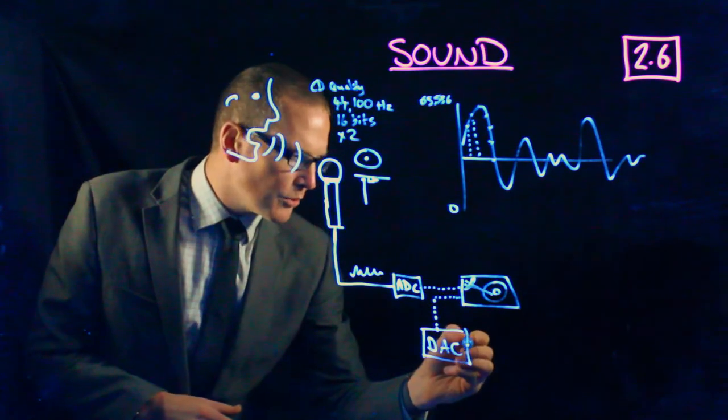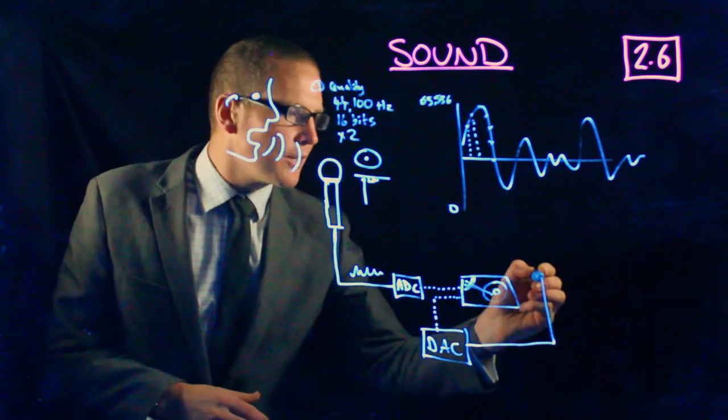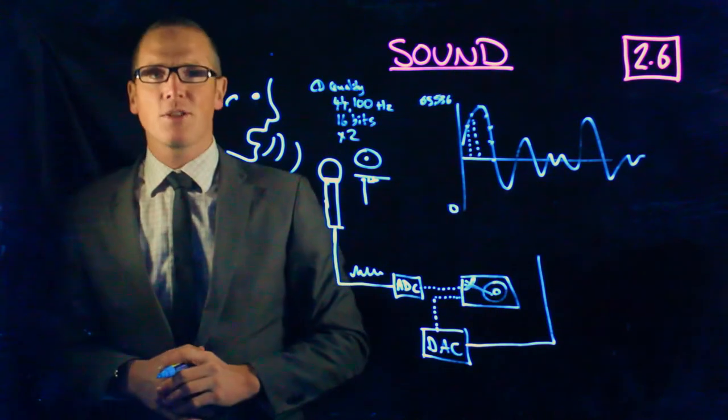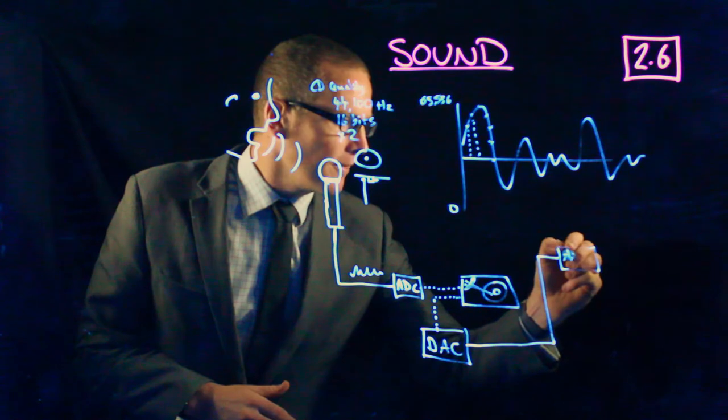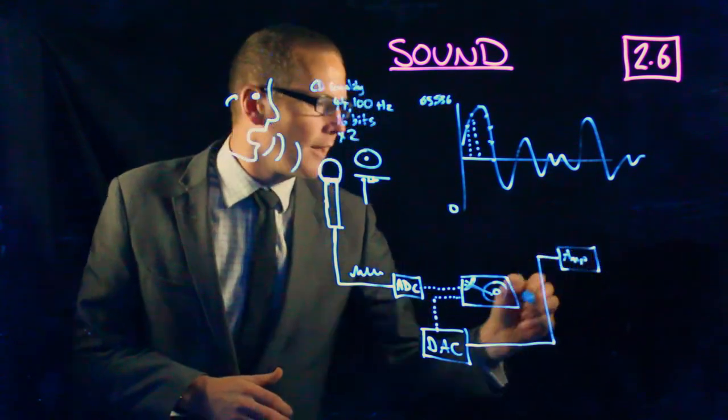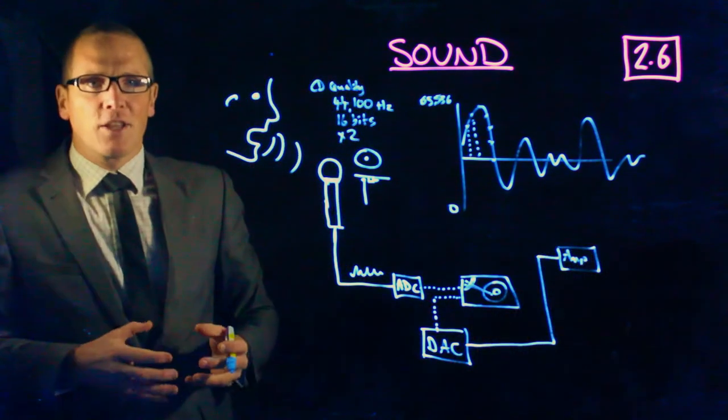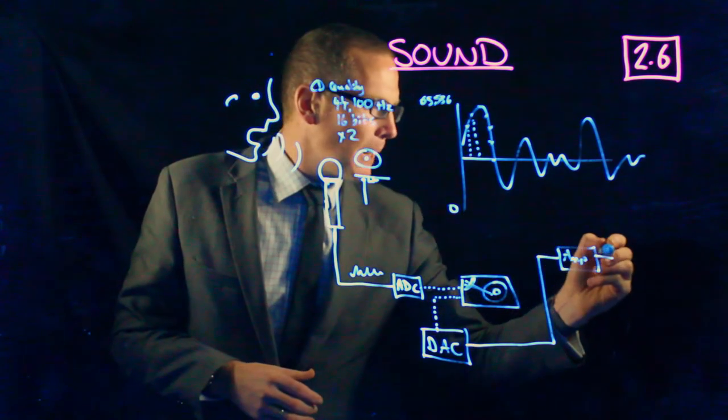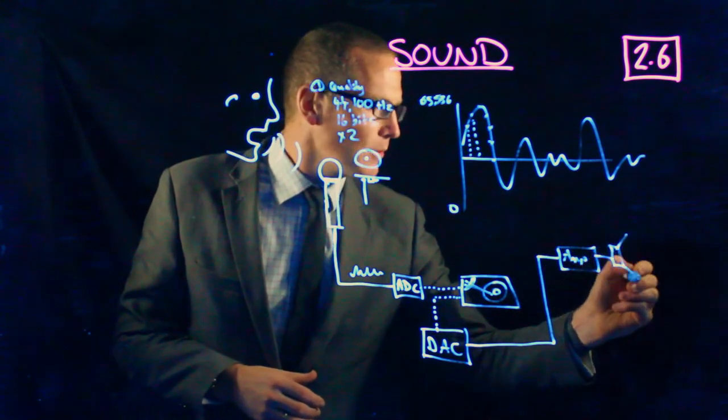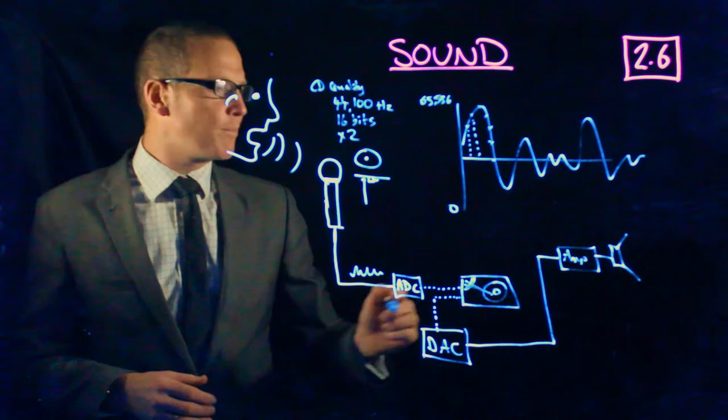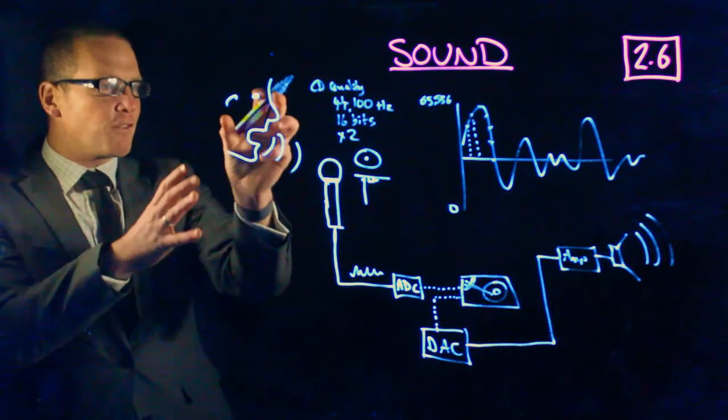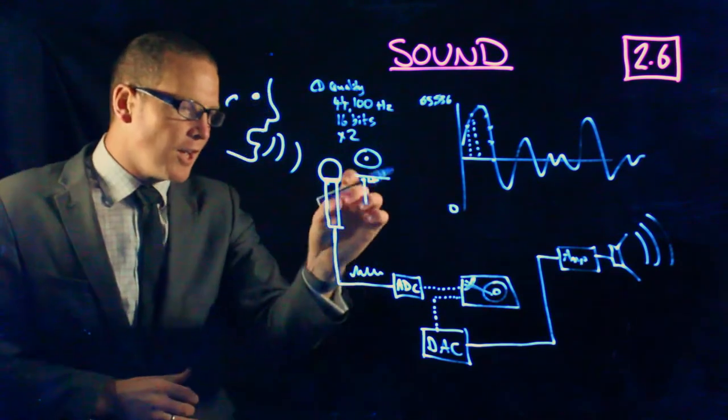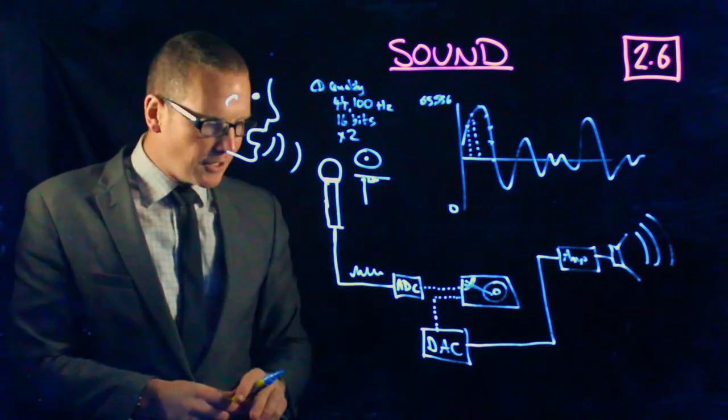Now your signal, your new analog signal, comes out of your digital to analog converter and into an amplifier. That amplifier can boost the signal to power a loudspeaker, which can then produce...